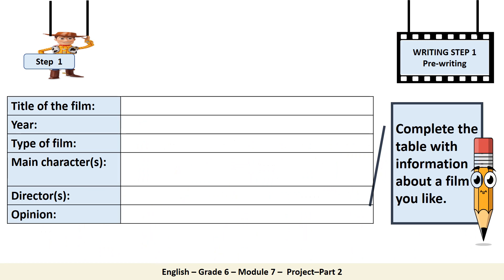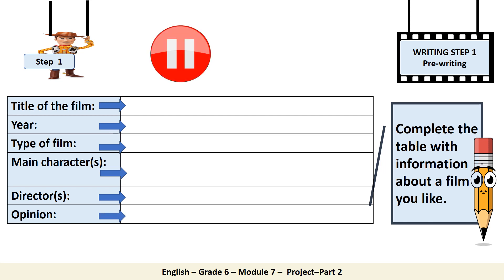Let's start brainstorming ideas by completing the table with information about a film you like. You have to write the title of the film, year of release, type of film, main characters, director, and opinion. Now pause and complete.